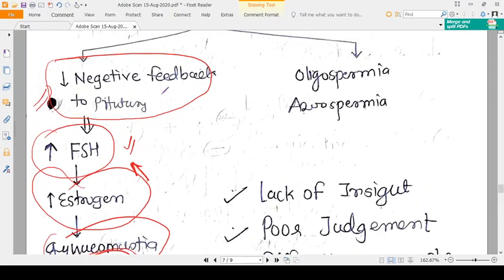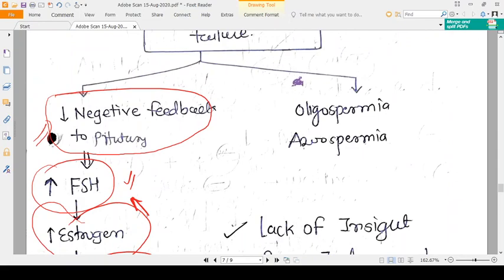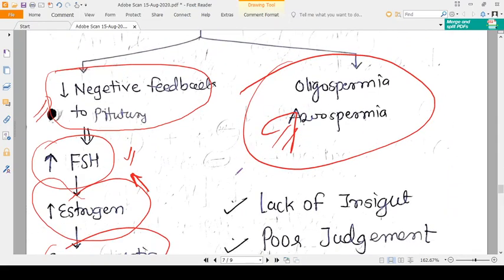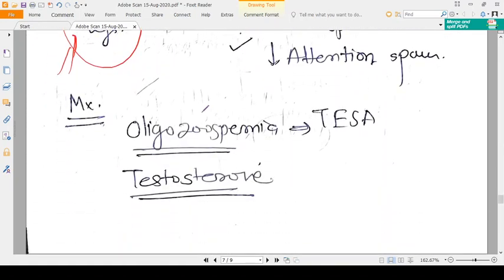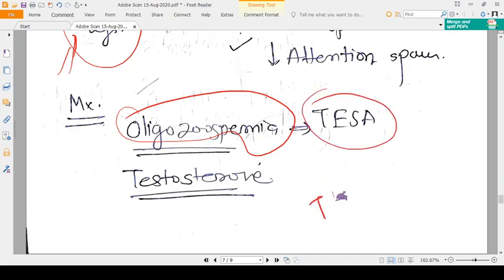What is the treatment of oligospermia? If the treatment of infertility is to be done, then we should go for TESA, that is testicular extraction of sperm, and give external testosterone.